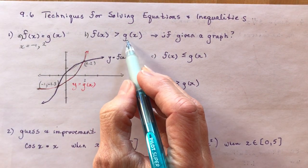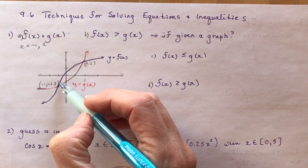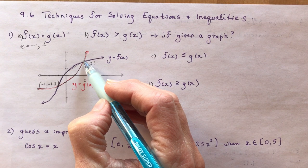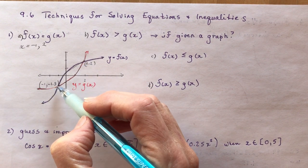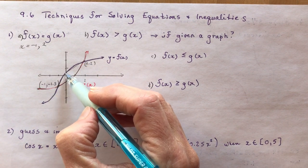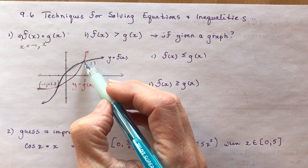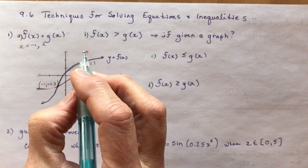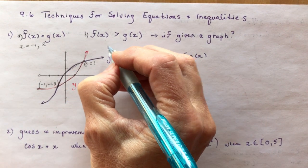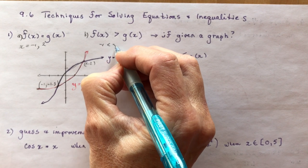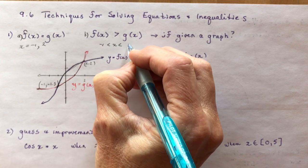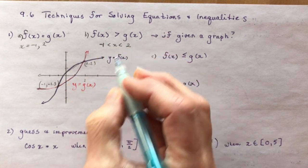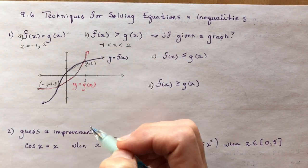Where is f(x) greater than g(x)? You want to look for where the y-values are higher for f(x) than g(x). Here g(x) is above it, and past this point it's below it. So you want to be between the two: negative 1 less than x less than 2.